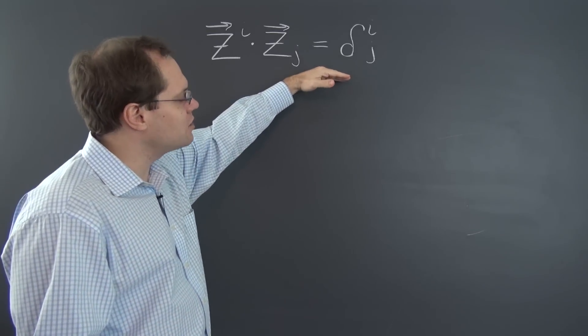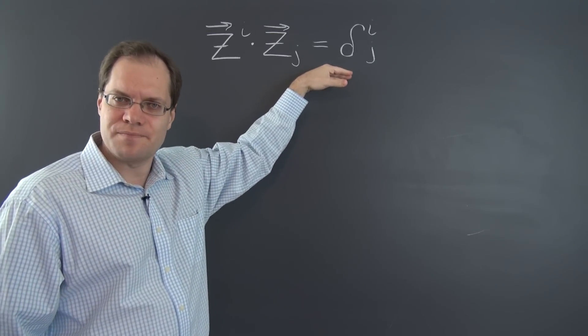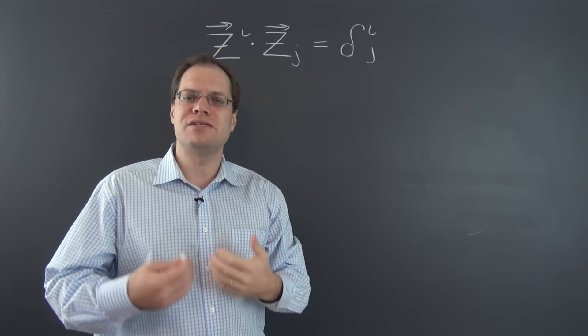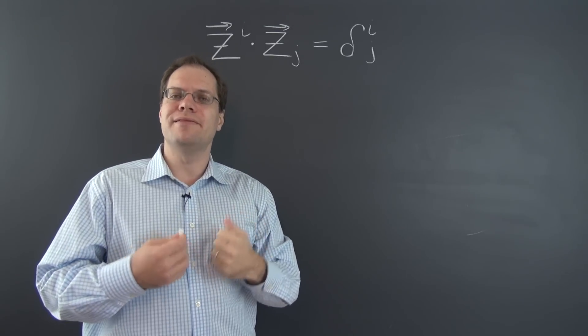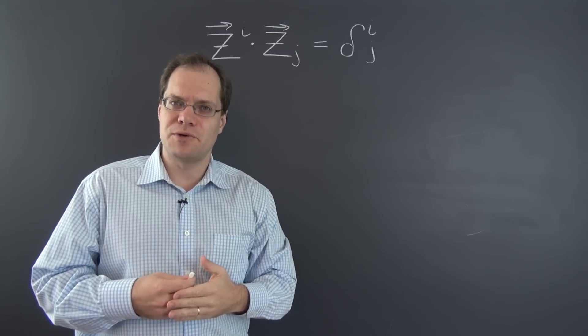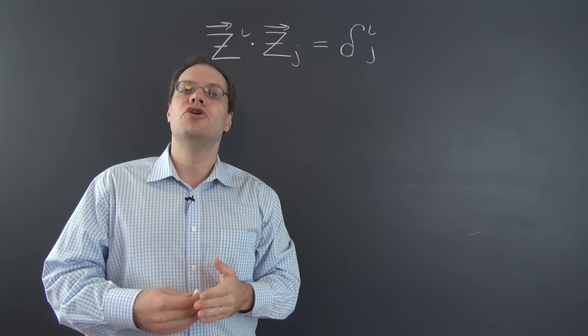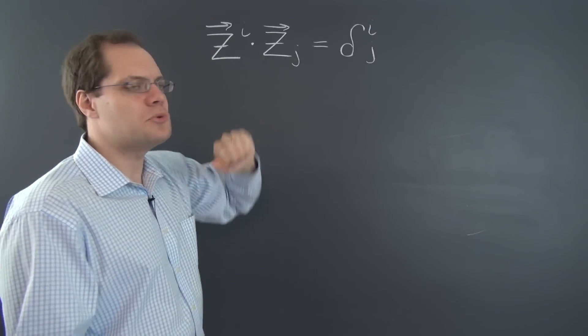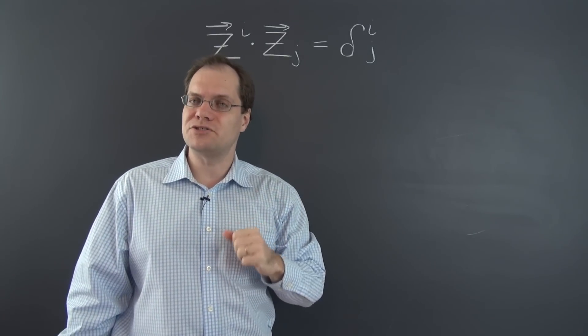And of course, later on when we introduce index juggling, this relationship may appear simply as a special case of index juggling. But logically, it's the other way around. Index juggling could not have been introduced without this relationship or the equivalent relationship between the metric tensors.